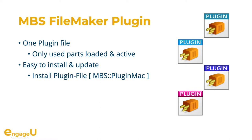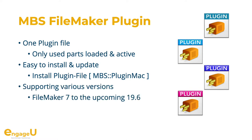You can automate installation with the install plugin script step, and we have an example database called "Install Plugin Update" where you can copy the script. We support a lot of FileMaker versions from the ancient version 7 to the current 19.5 and the upcoming 19.6 version.